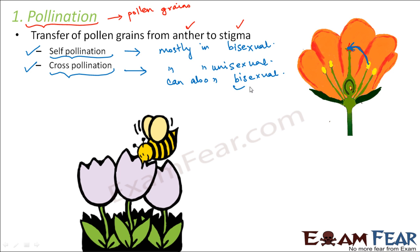Cross-pollination can happen in bisexual flowers when the male and female gametes do not mature simultaneously. For example, if the male parts have matured and pollen grains have been formed, but the female part has not yet matured, the pollen grains can be transferred from this flower to some other flower of a different plant. So cross-pollination is happening even though it is a bisexual flower. Self-pollination means within the same flower; cross-pollination means different flowers.